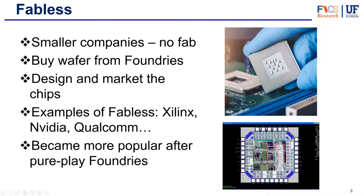So who does the designing? The designing is up to the fabless — the name is pretty self-explanatory: they have no fab. They are usually smaller companies that don't have the budget to build a fab, or sometimes companies that decide not to go into that part of the industry and just focus on the design aspect. Besides designing, they send their designs to the foundries and they're the ones that market and sell the chips. Examples of fabless companies are Xilinx, Nvidia, or Qualcomm — not necessarily small companies, but they do not take care of the manufacturing part.